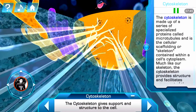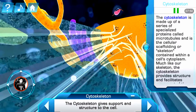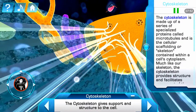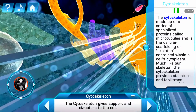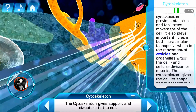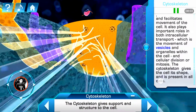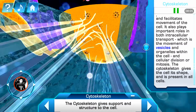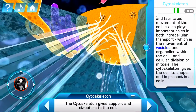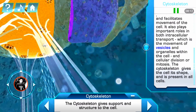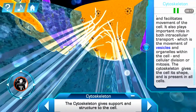The cytoskeleton is made up of a series of specialized proteins called microtubules and is the cellular scaffolding or skeleton contained within a cell's cytoplasm. Much like our skeleton, the cytoskeleton provides structure and facilitates movement of the cell. It also plays important roles in both intracellular transport — the movement of vesicles and organelles within the cell — and cellular division, or mitosis. The cytoskeleton gives the cell its shape and is present in all cells.